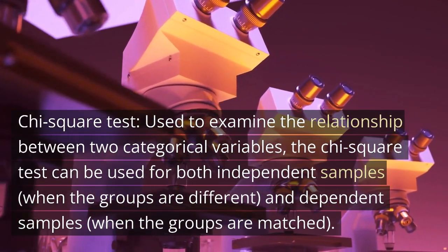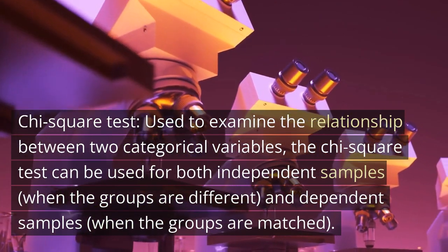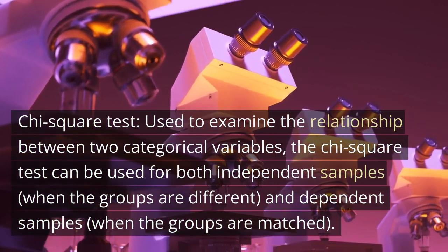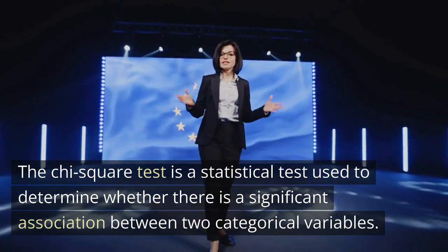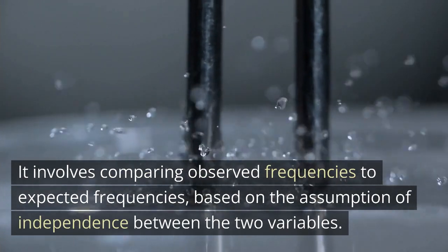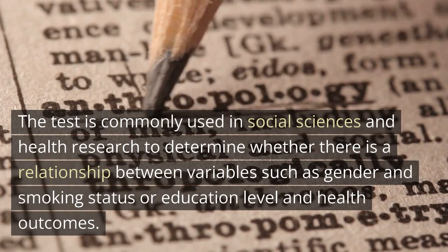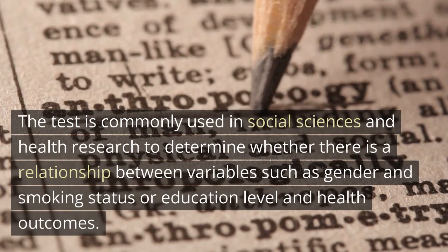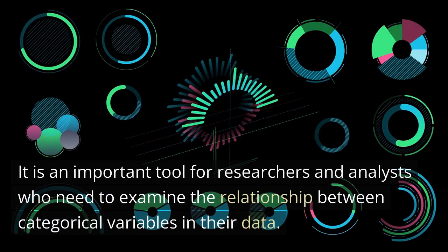The Chi-Square test is a statistical test used to examine the relationship between two categorical variables. It can be used for both independent samples, when the groups are different, and dependent samples, when the groups are matched. The test involves comparing observed frequencies to expected frequencies, based on the assumption of independence between the two variables. It is commonly used in social sciences and health research, for example to determine whether there is a relationship between gender and smoking status or education level and health outcomes. The Chi-Square test is useful for identifying patterns in large datasets and can be used to make predictions about future events.